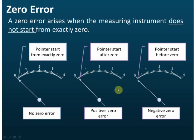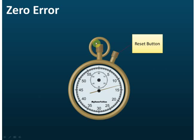So zero error can be positive or negative. When you make measurements and realize there is a zero error, you must identify whether it's a positive or negative zero error. Only then can you remove the error — if you don't know the sign, you can't correct it.